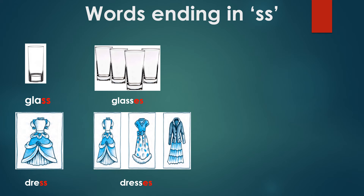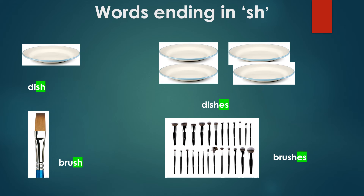One glass, many glasses. One dress, many dresses — D-R-E-S-S-E-S. Next, examples of words ending in SH: one dish, D-I-S-H, many dishes, D-I-S-H-E-S. One brush, B-R-U-S-H, many brushes, B-R-U-S-H-E-S.